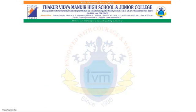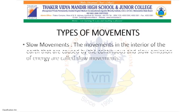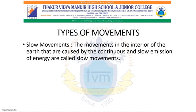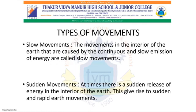We will now see the two different types of internal movements taking place in the interior of the earth. The first one is slow movements — movements in the interior of the earth that are caused by the continuous and slow emission of energy. The second type is sudden movements, where there is a sudden release of energy in the interior of the earth, giving rise to sudden and rapid movements. Generally, these movements take place in the upper layer of the mantle.